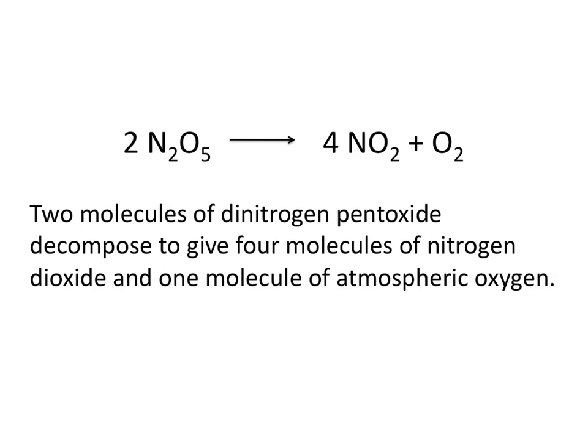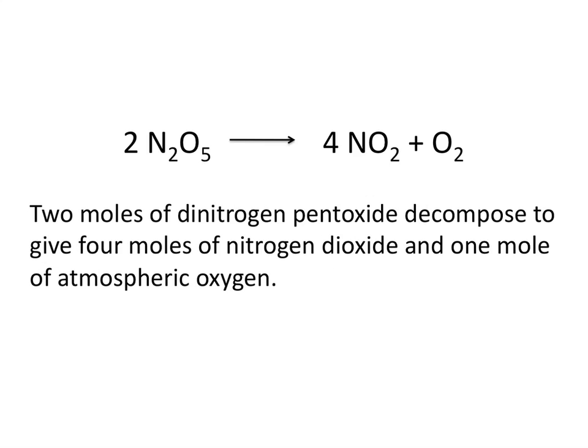For example, this reaction tells us that two molecules of dinitrogen pentoxide decompose to give four molecules of nitrogen dioxide and one molecule of atmospheric oxygen. This equation could also be read that two moles of dinitrogen pentoxide decompose to give four moles of nitrogen dioxide and one mole of atmospheric oxygen.